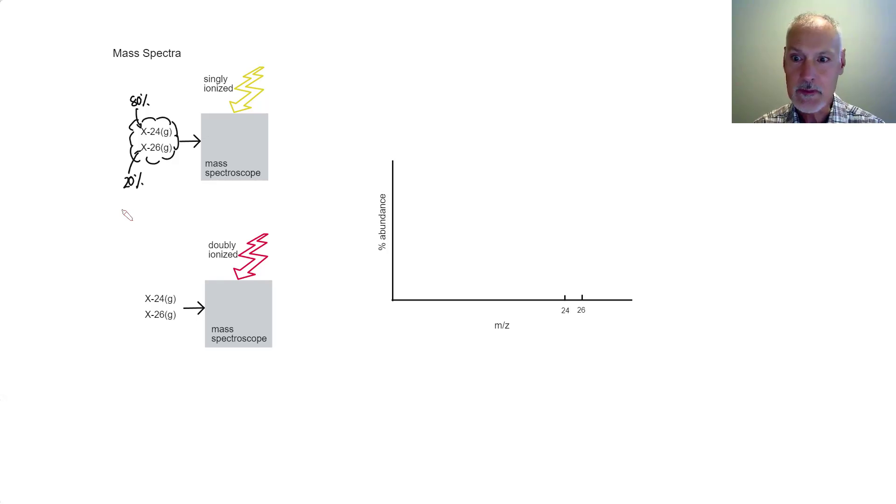We put the gas through something called a mass spectroscope, where it's exposed to X-rays. And in my first case, I'm gonna consider that the X-rays singly ionize our gas. So what that would mean is it removes or promotes one electron. So my gas, X, here would lose an electron, and then develop a plus-one charge. So I would have X-24 gas and it would produce an electron.